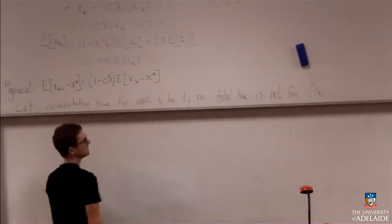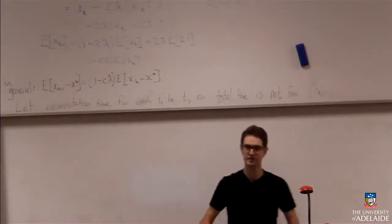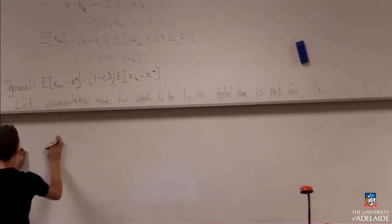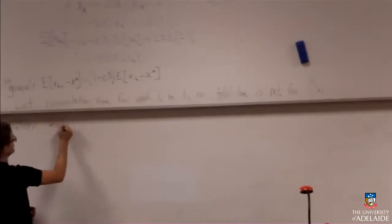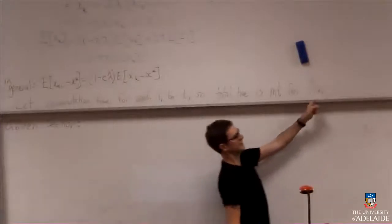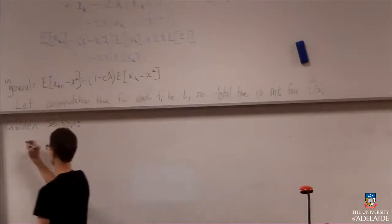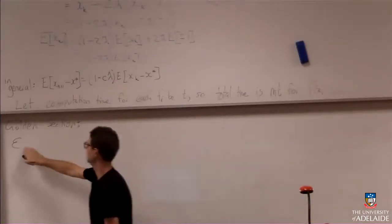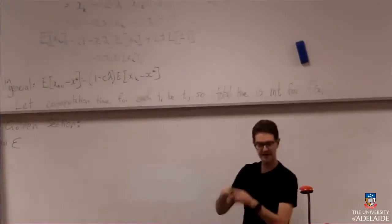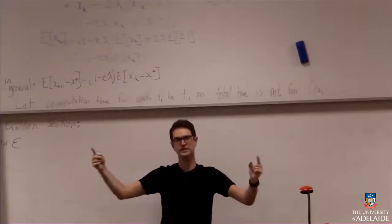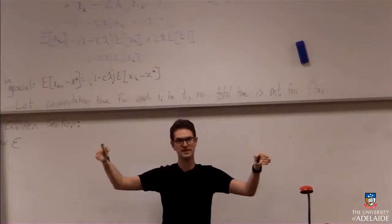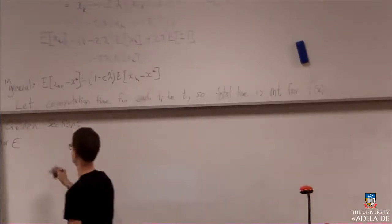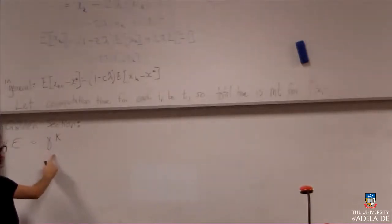We're going to compare finding the minimizer using golden section search — our most efficient direct search method — with stochastic gradient descent. For golden section search, the error after k steps is the width of the interval, which reduces by the golden ratio each time. After k steps, the width is γᵏ times the initial interval length. Without loss of generality, we scale the initial interval to 1, so the error is γᵏ.